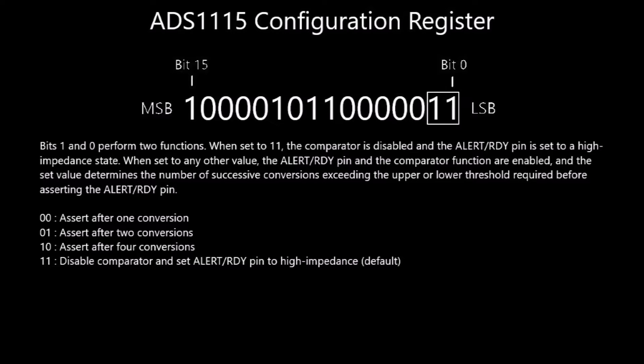Bits 1 and 0 can disable the comparator or set the number of conversions to complete when a threshold has been reached before activating the alert ready pin. This is useful because given how fast the ADC operates, you can require one, two, or four conversions before the alert ready pin is activated.